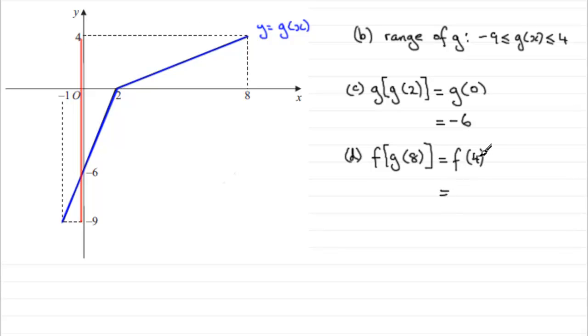Now what is f of 4? Well we've got to go back to the earlier part of the question where we saw that f of x was equal to 3 minus 2x all divided by x minus 5.